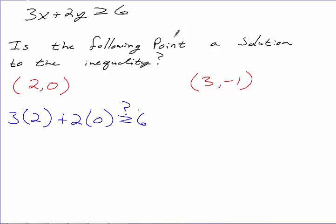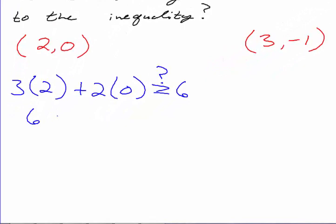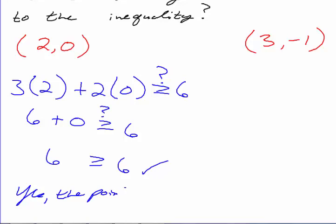So what's 3 times 2? That's 6. And 2 times 0 is 0. So 6 plus 0 — is 6 greater than or equal to 6? It's not greater than, but it's equal to. So we put a check mark. If the statement is true, the point is a solution. If the statement is false, the point is not a solution.